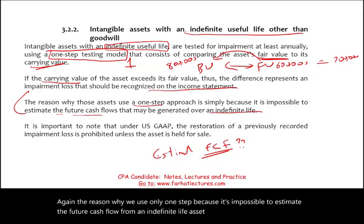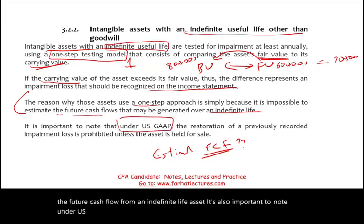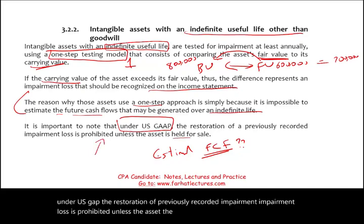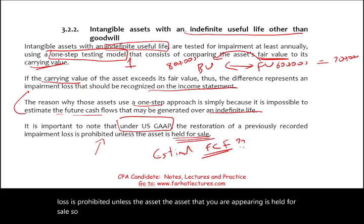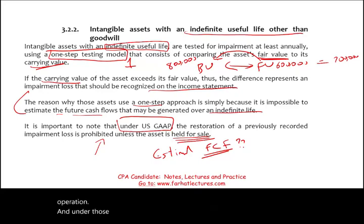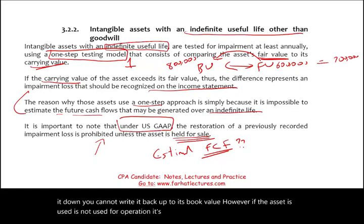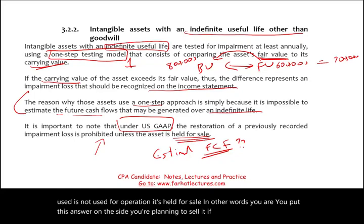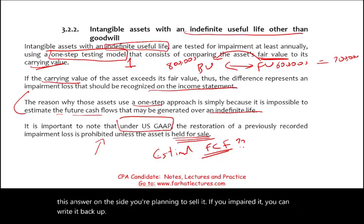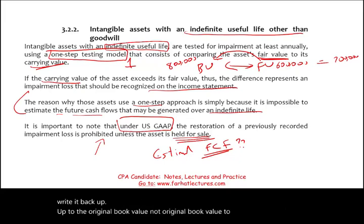Under U.S. GAAP, the restoration of a previously recorded impairment loss is prohibited unless the asset is held for sale. If the asset is used in operations, once you write it down, you cannot write it back up. However, if the asset is held for sale — meaning you plan to sell it — you can write it back up, but only up to the book value at the time impairment was recorded.